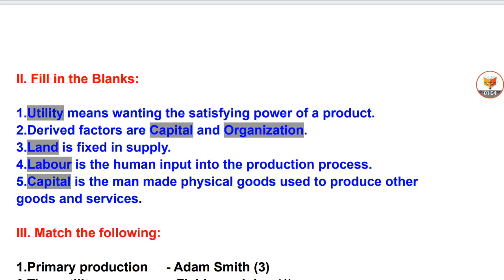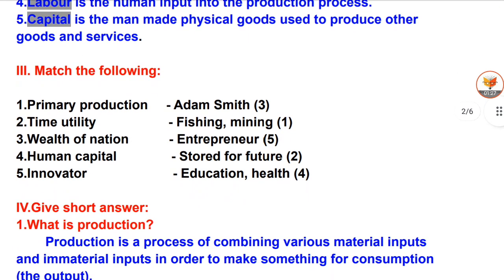Fill in the blanks. 1. Utility means the want-satisfying power of a product. 2. Derived factors are capital and organization. 3. Land is fixed in supply. 4. Labor is the human input into the production process. 5. Capital is the man-made physical goods used to produce other goods and services.